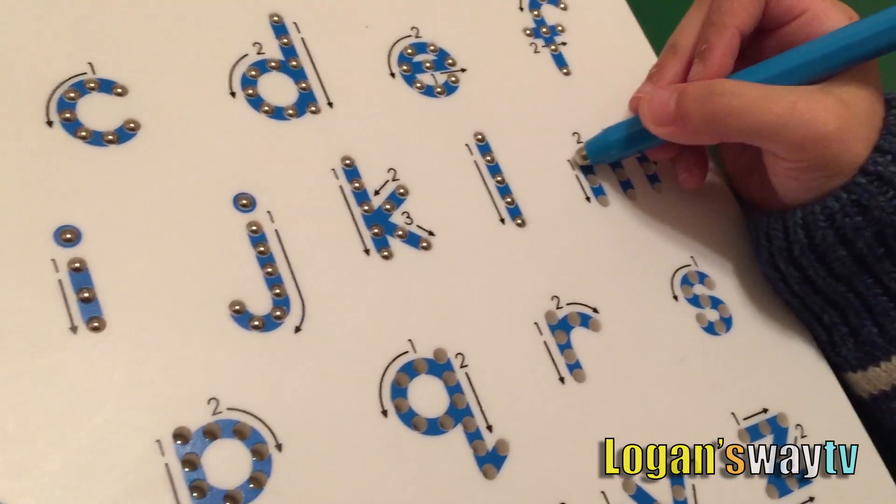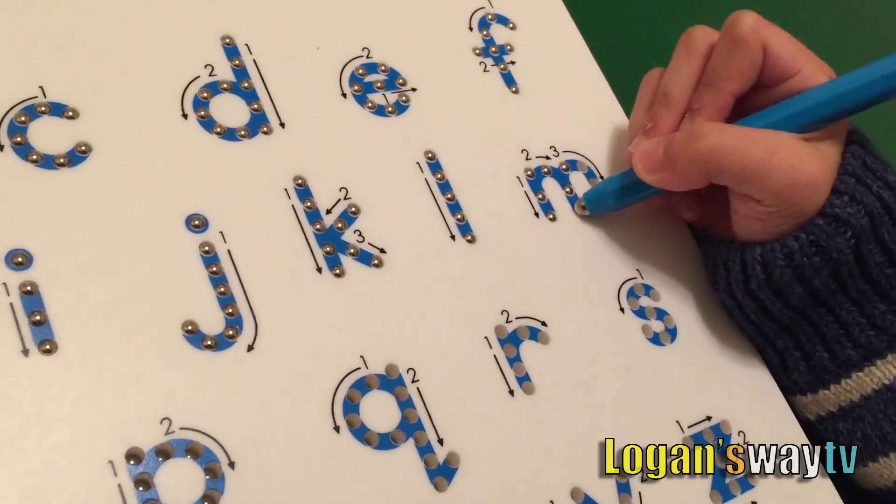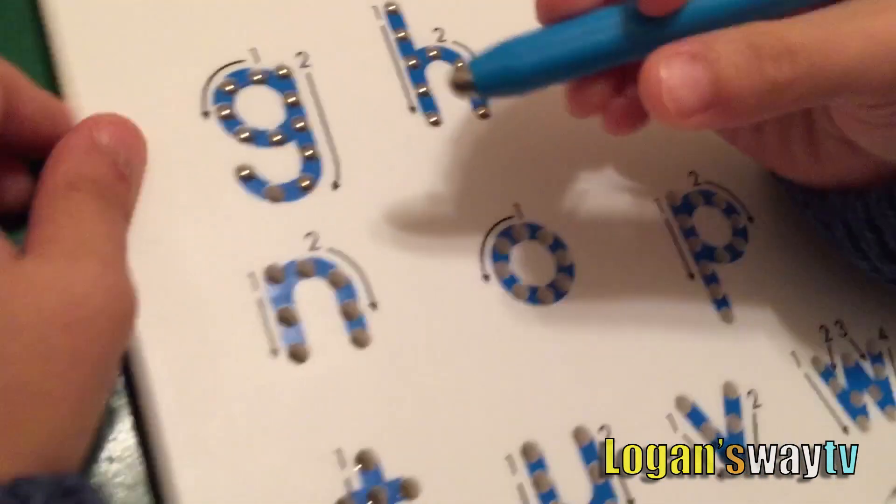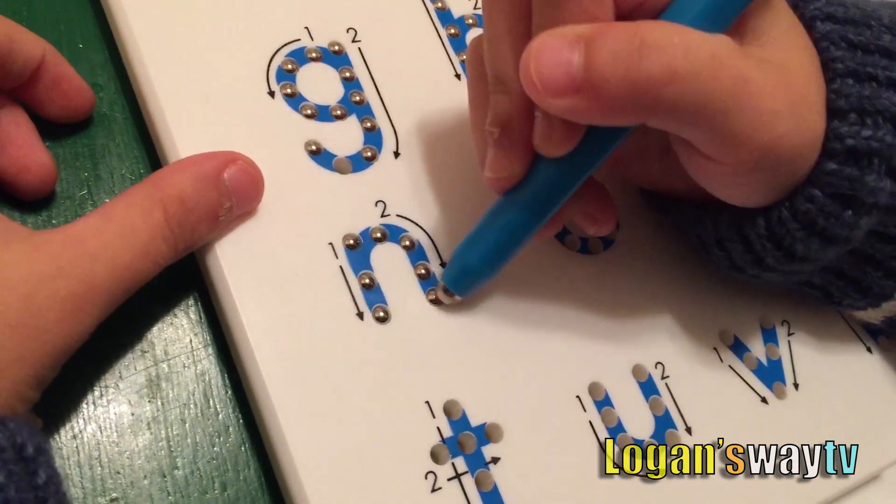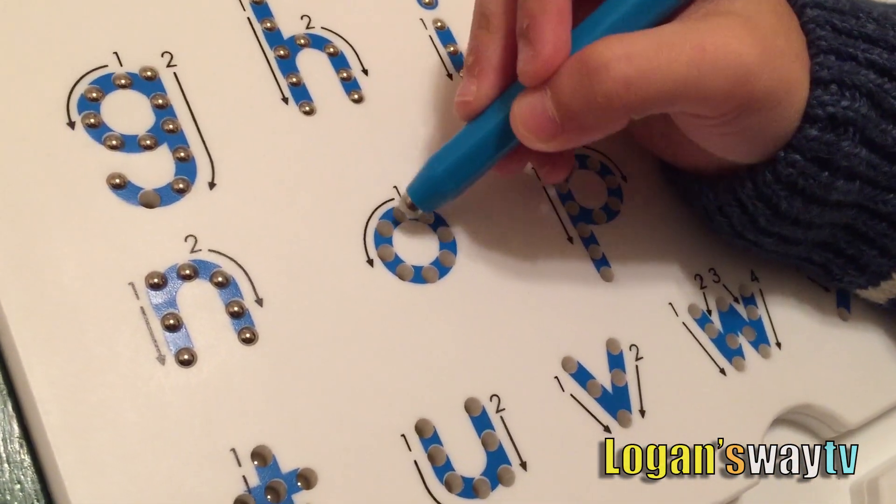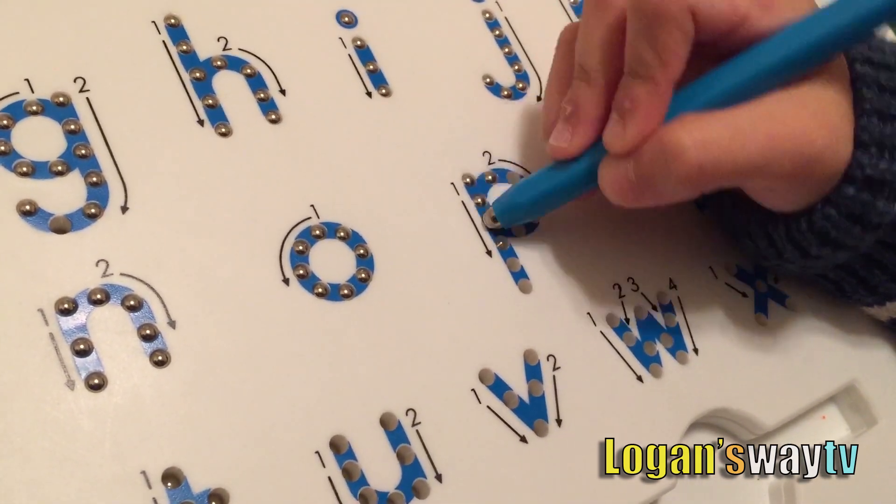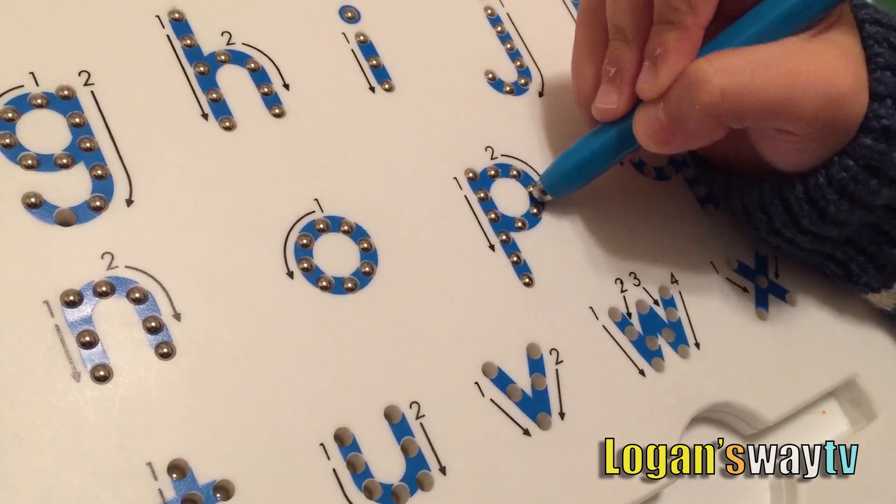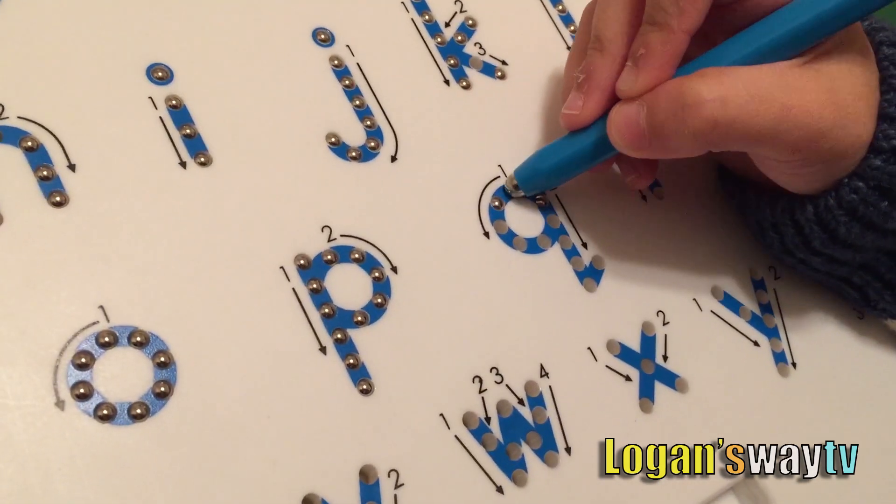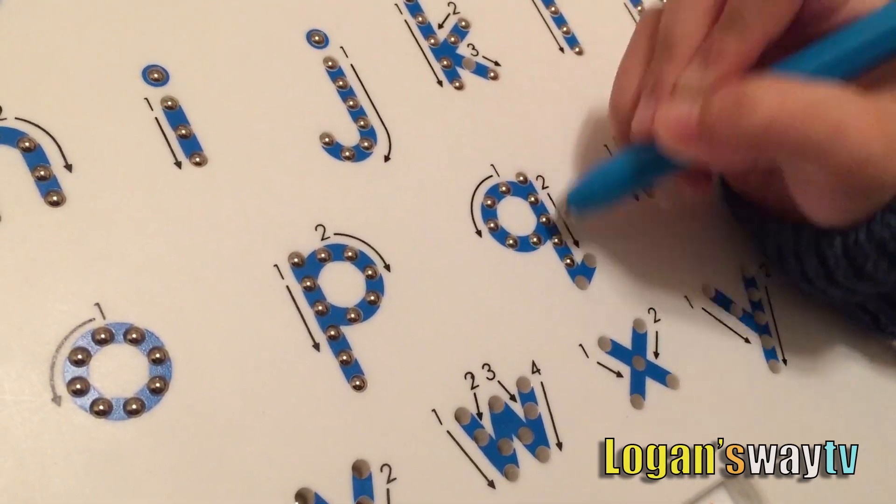L is for lion, M is for monkey, N is for nose, O is for octopus, P is for pig, Q is for question.